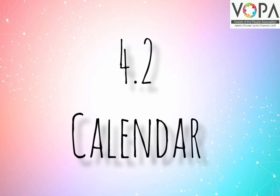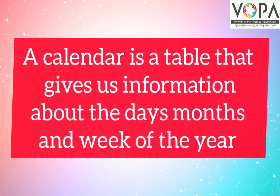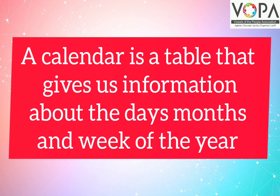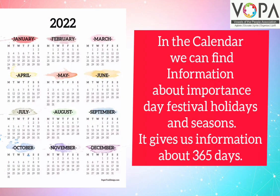4.2 Calendar. A calendar is a table that gives us information about the days, months and weeks of the year. In the calendar, we can find information about important days, festivals, holidays and seasons. It gives us information about 365 days.